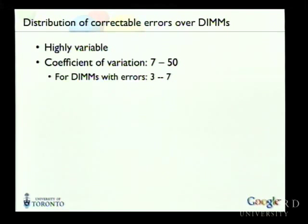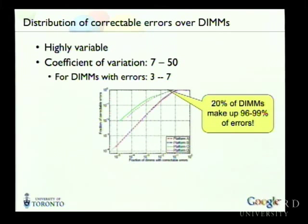Going back to the surprising average of 3,700 correctable errors per DIMM per year: these are averages, and the distribution is highly variable. The coefficient of variation is between 7 and 50 depending on platform and DIMM type — way higher than a Poisson distribution. The top 20% of DIMMs make up 96 to 99% of all errors. So there are some DIMMs that just keep having a lot of errors and drive up the total average. In total, it's really only about 8% of all DIMMs that have errors at all, and those 8% bring up the average across the whole population to 3,700 errors per year per DIMM.